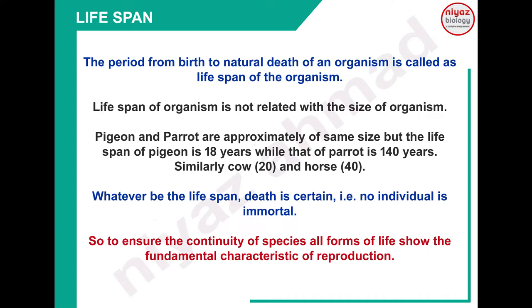اس کے لیے example دیا ہوا ہے pigeon اور parrot - لگ بگ دونوں کا same size ہوتا ہے لیکن pigeon کا life span کافی کم ہے as compared to parrot. Pigeon کا average life span ہے 18 years while that of parrot is around 140 years. Similarly cow 20 years, horse 40 years. Cow اور horse کے size میں اتنا difference نہیں ہوتا لیکن life span میں double کا difference ہے۔ So overall it is proof that life span of an organism is not related with the size of organism.